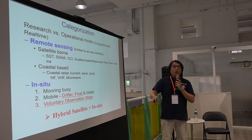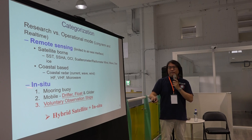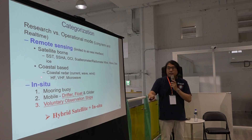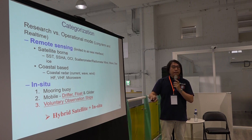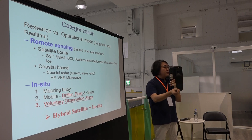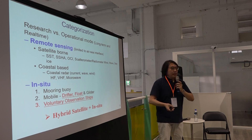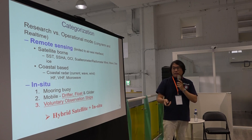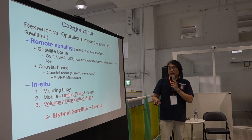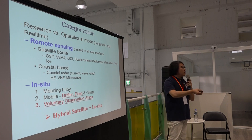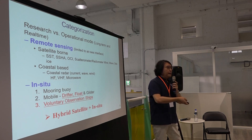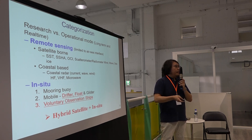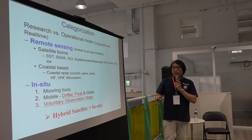In-situ measurements are more important because they are used for calibration of models and remote sensing data. The first type is mooring — instruments fixed at certain locations, mooring buoys at fixed positions. The second is mobile, meaning the instrument is transported by ocean currents over time. These are called Lagrangian observations — drifters, floats, or gliders that move along with the current without power.